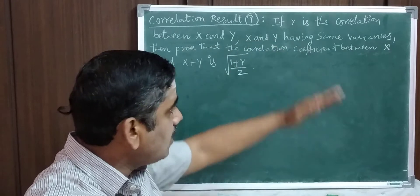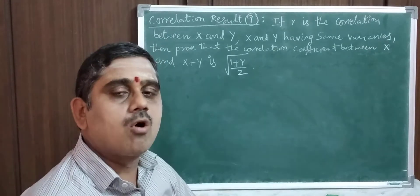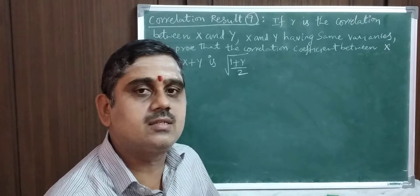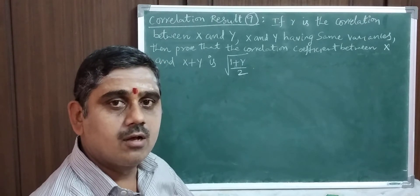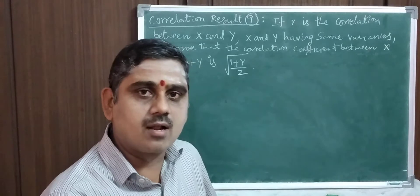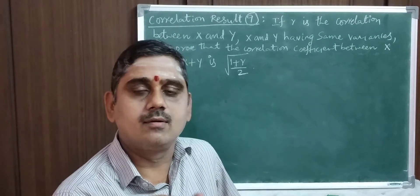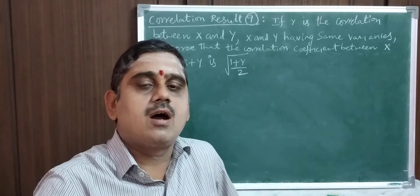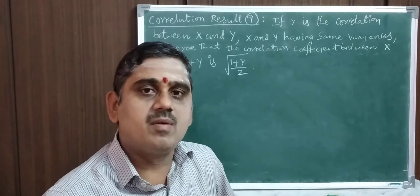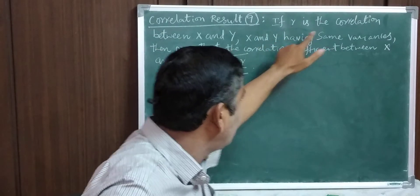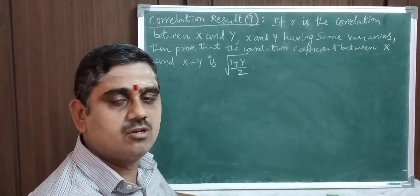It is given that x and y have the same variances. We have to prove that the correlation coefficient between x and x plus y is square root of (1 plus r) by 2, where r is the correlation coefficient between x and y. When simple r is given without specification, it is nothing but the correlation coefficient between x and y.